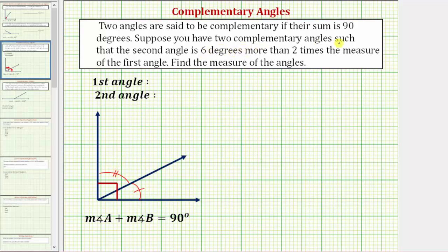Suppose you have two complementary angles such that the second angle is six more than two times the measure of the first angle. We're asked to find the measure of the angles.